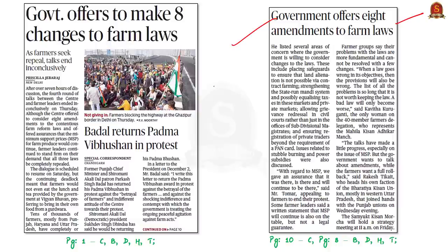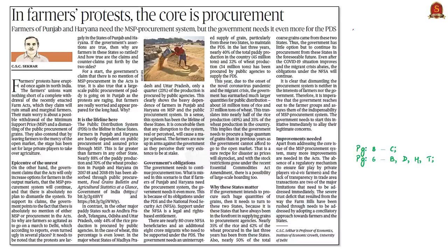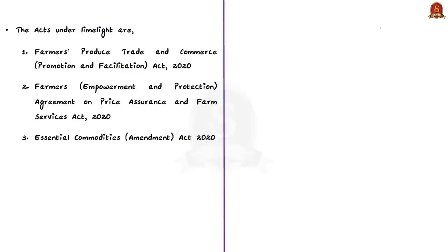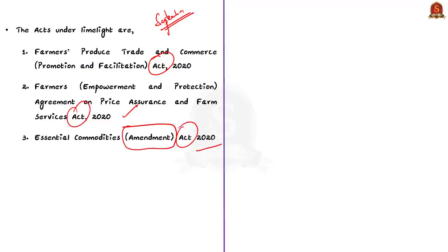The next two news articles are about the ongoing negotiations between farmer organizations and the Union government over the three farm bills. These bills were already passed by Parliament and received presidential assent in September of this year — so they are now acts. The three acts are: Farmers' Produce Trade and Commerce Act 2020, Farmers' Agreement on Price Assurance and Farm Services Act 2020, and the Essential Commodities Amendment Act 2020. Today's question is why the farmers are protesting.